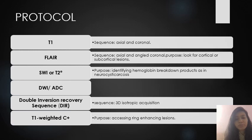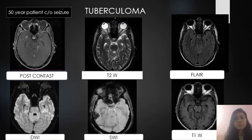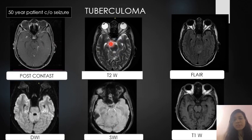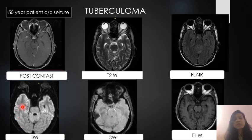Additionally, spectroscopy can be added for further confirmation. Our first case is tuberculoma: a 50-year-old patient complaining of seizures showing a conglomerated ring enhancing lesion in the right anterior temporal region, hyperintense on T2, no restriction on FLAIR or mild diffusion restriction on DWI — which can be seen in tuberculomas — no blooming on SWI, hypointense on T1. This is most likely suggestive of a granulomatous lesion like tuberculoma.